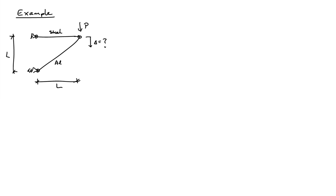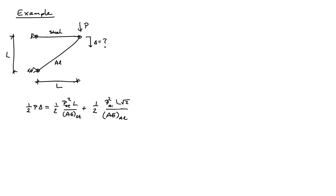We'll go ahead and use conservation of energy to solve this problem. The work in is one half P delta because I have an elastic system, and the work stored is the energy stored in the two truss bars. Each truss bar is subjected only to loads at its ends, so I can use the result from my previous example that said the work stored in the bar is going to be one half the force in the bar squared times its length divided by the AE for the bar.